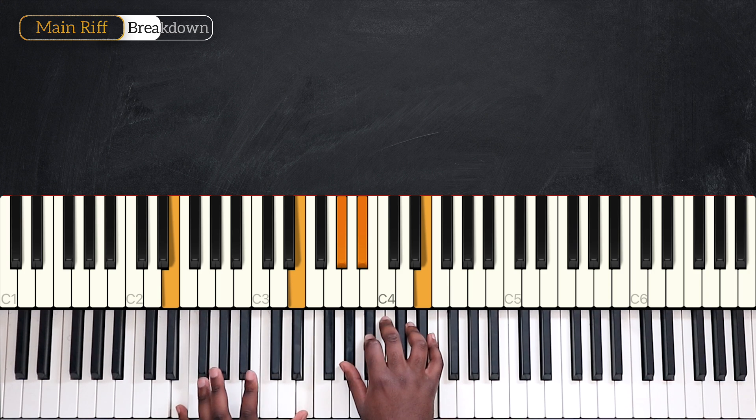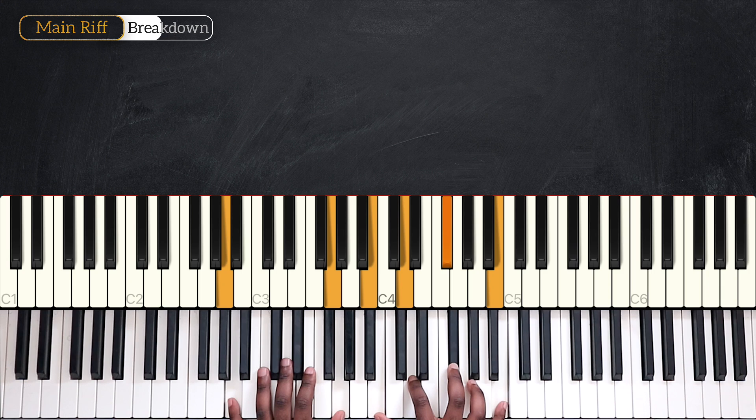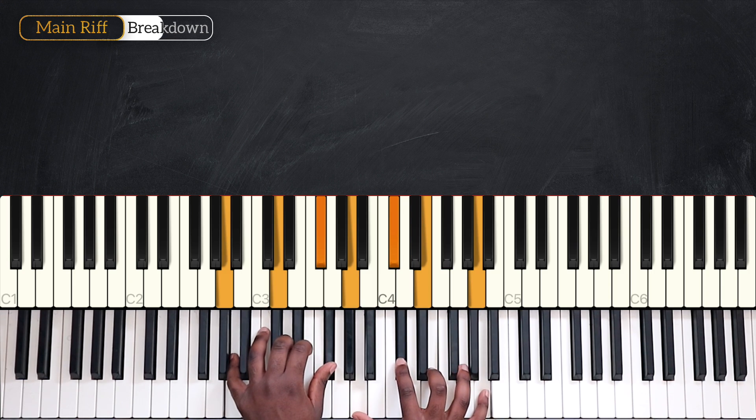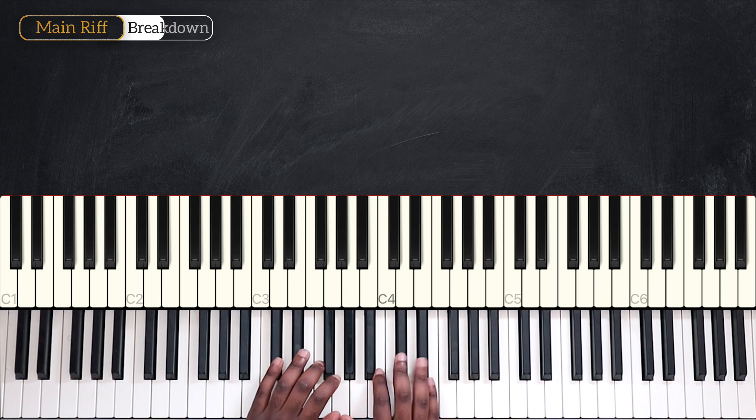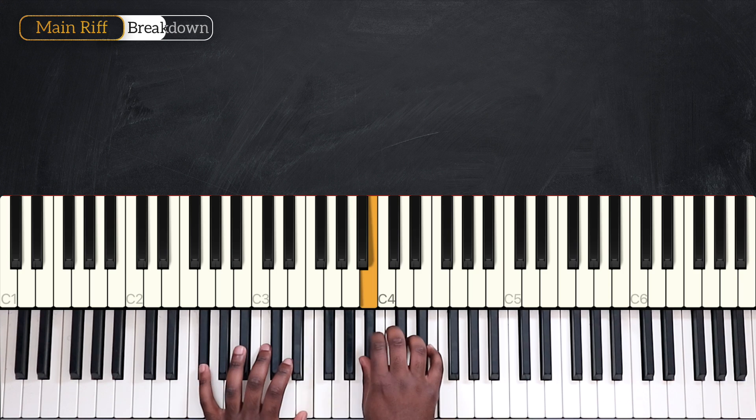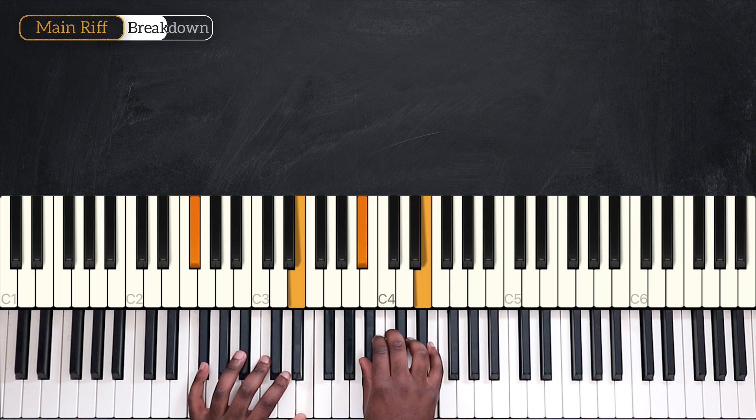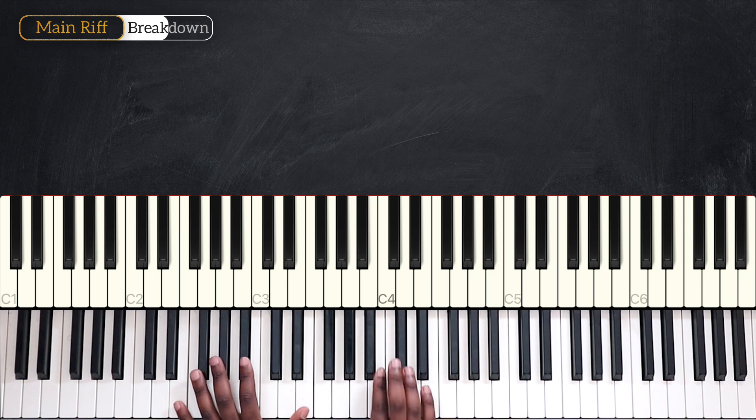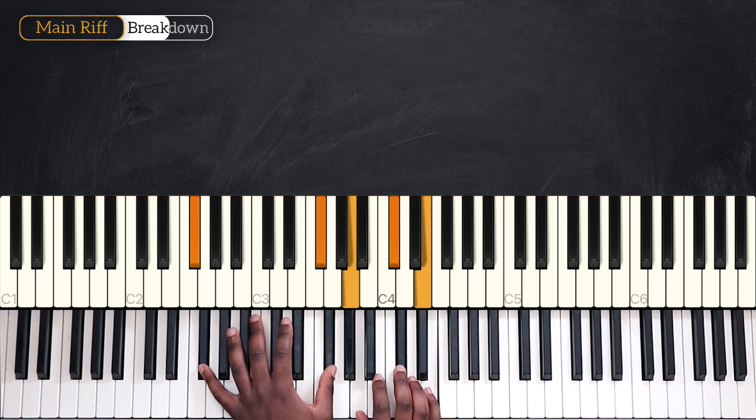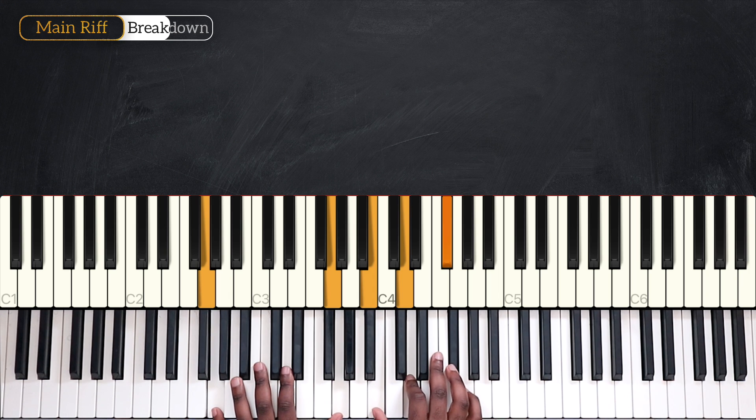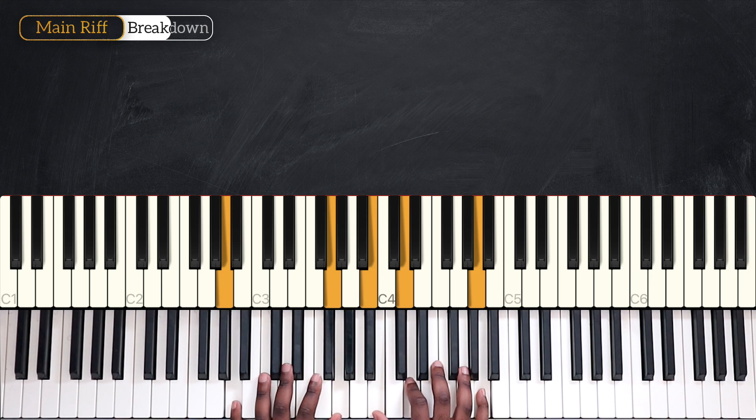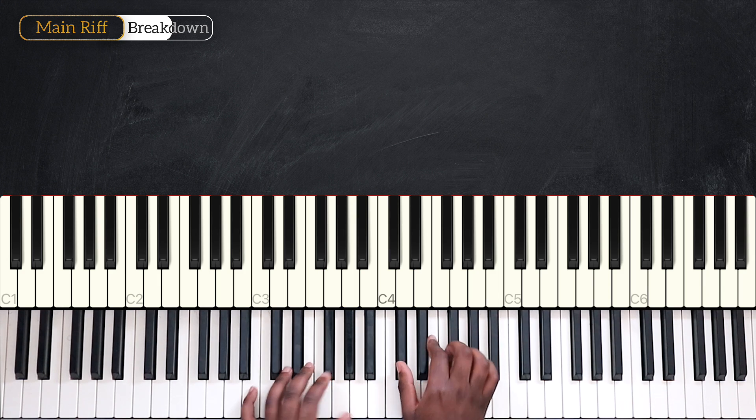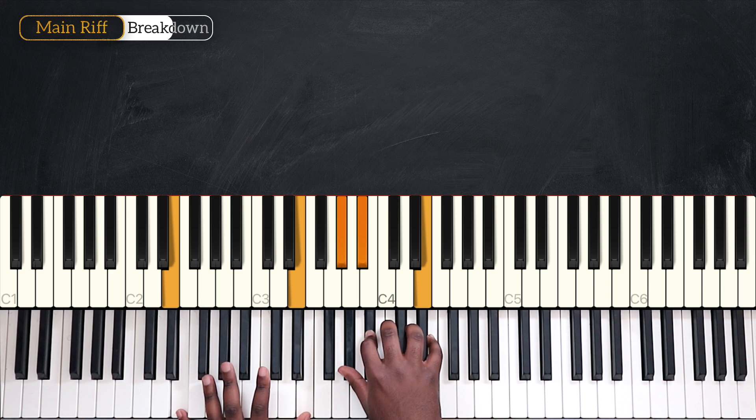And then in the second part we have A13, going to D major 9, C sharp 7 sharp 9, and then F sharp 7. So for the first part of the main riff, we're going to play E, F sharp, G, A11, and then B minor, and end it with E sharp 11.